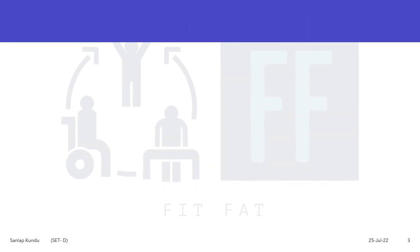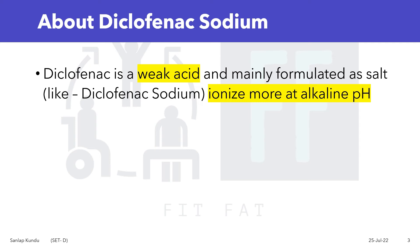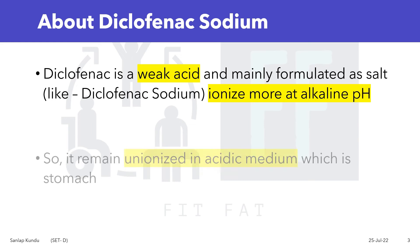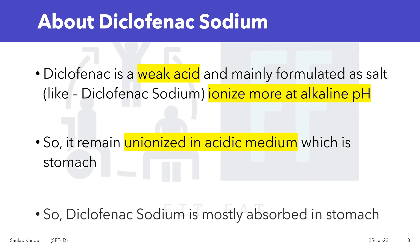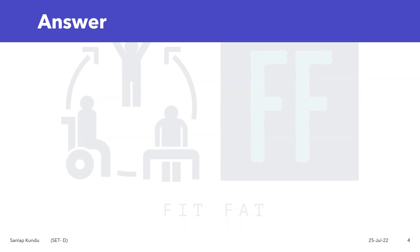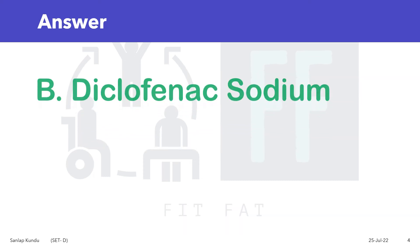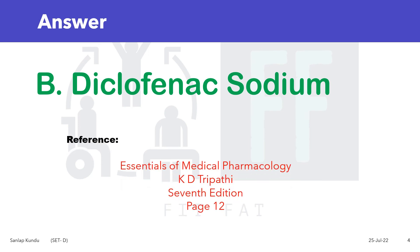Now let's look at diclofenac sodium. Diclofenac is a weak acid, mainly formulated as a salt — diclofenac sodium — which ionizes more at alkaline pH. So it remains unionized in the acidic medium of the stomach and is mostly absorbed there. Therefore, the answer to the question is option B: diclofenac sodium. You can find this in the Medical Pharmacology book by KD Tripathi, page number 12.